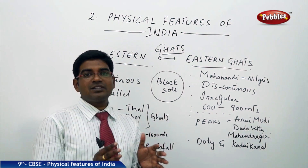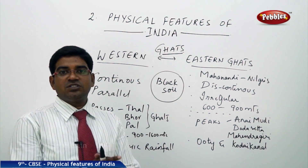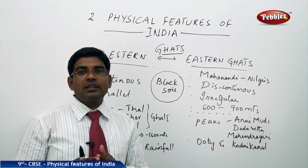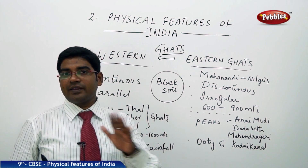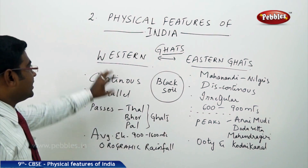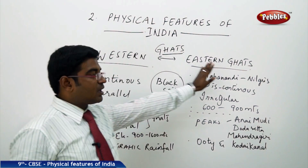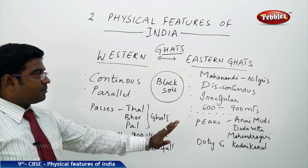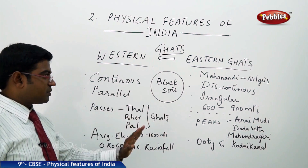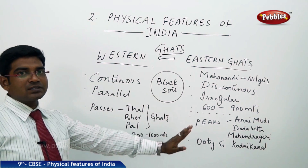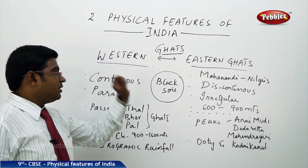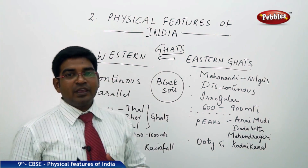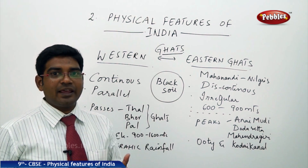Now moving on to understand the Western Ghats and the Eastern Ghats, which are located at the edges of the Deccan Plateau, running parallel to the western coast and the eastern coast respectively. Before moving on to the Western Ghats and the Eastern Ghats, note that the Deccan Plateau consists largely of black soil, as it is a tableland.